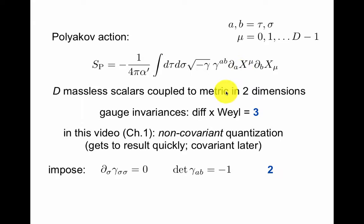Together these are three invariances: two coordinate transformations and one rescaling. The Poincaré invariance is not a local symmetry from the point of the world sheet, it's a global symmetry since these are scalars from the point of view of the world sheet. In this video I will now non-covariantly quantize this action. This gets to the result quickly but we will want to use a covariant method later.